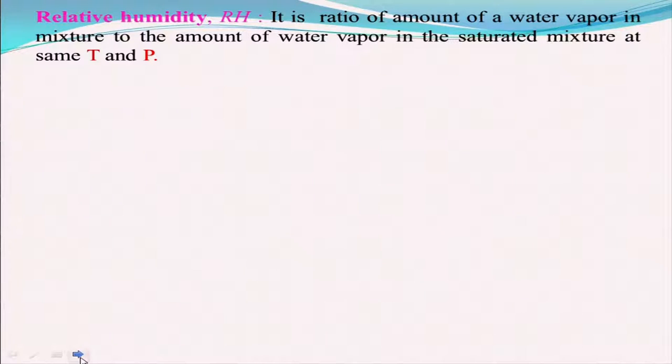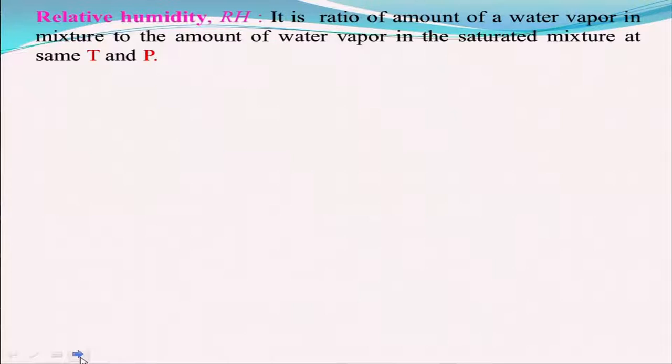For that we will define a term called relative humidity. There is a capacity of air to hold some amount of water; beyond that it cannot — that is related to the saturation point. Relative humidity is the ratio of the amount of water vapor in the mixture to the amount of water vapor in the saturated mixture at a particular temperature and pressure. From the saturated steam temperature table you can get what the partial pressure will be, and from that you can find the amount of moisture.